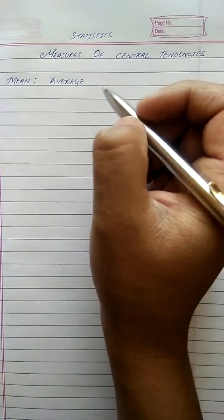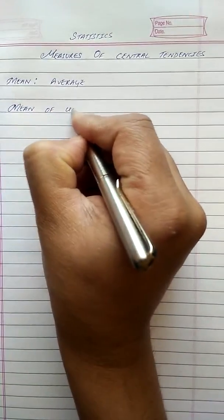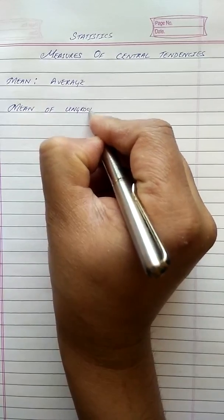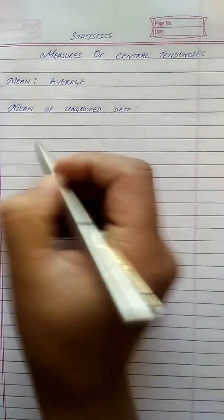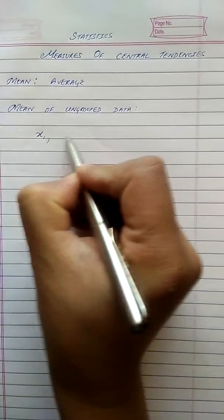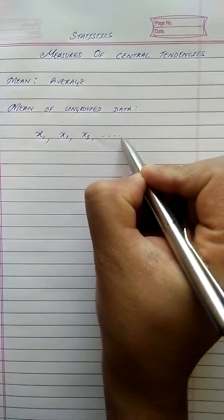In today's class we are going to learn the mean of ungrouped data. Mean of ungrouped data. Let us suppose these are the variants which are ungrouped.